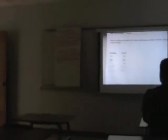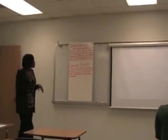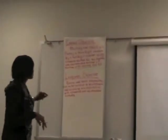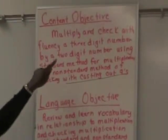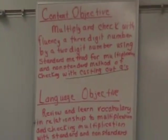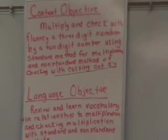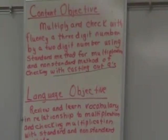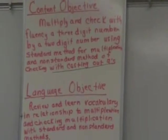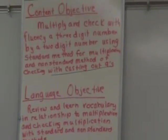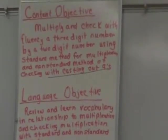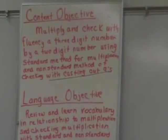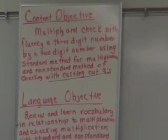We're going to move on today. Our content objective is going from two-by-two digit multiplication to three-by-two digit multiplication. We will multiply and check with fluency a three-digit number by a two-digit number using the standard method, but we will use a non-standard method of checking called casting out nines — and you will love it.